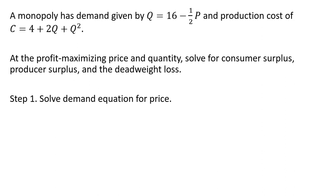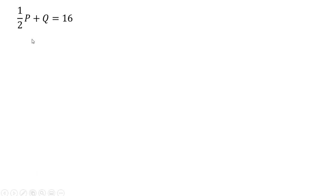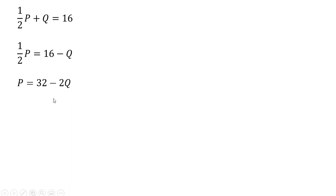Step one: we're going to solve the demand equation for price — we're going to get the inverse demand, as it's sometimes called. So we take the demand equation and solve for P. Adding 1/2 P to both sides, subtracting Q from both sides, and then multiplying through by 2. 2 times 16 is 32, and 2 times negative Q is minus 2Q. And we have our inverse market demand.